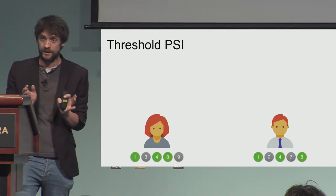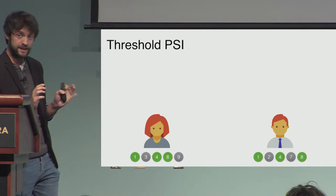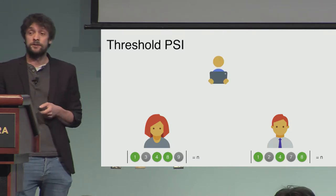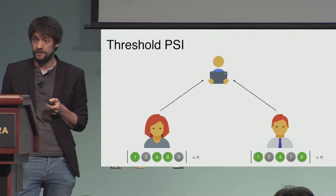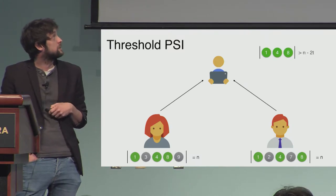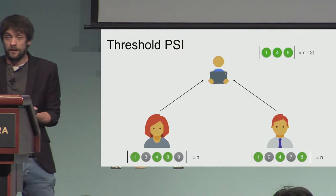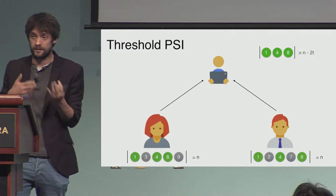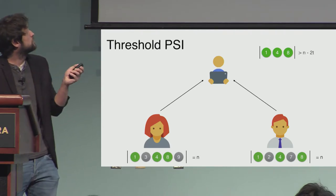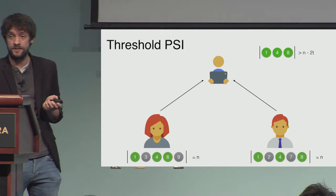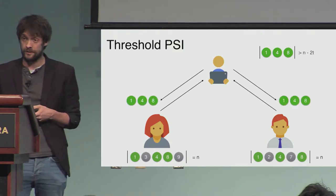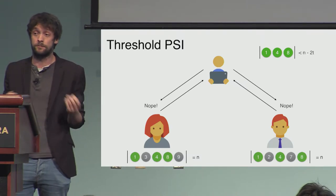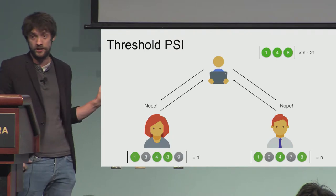To clarify the functionality: both parties have sets of size n and send them to an ideal functionality which checks whether their sets have a large intersection. Having a large intersection is equivalent to having a small set difference. We check whether the sets differ by no more than 2t elements. If so, both parties learn the intersection; otherwise they learn nothing beyond the fact that their sets are not similar enough. This is what we realize in a communication-efficient way.